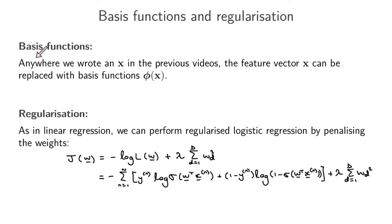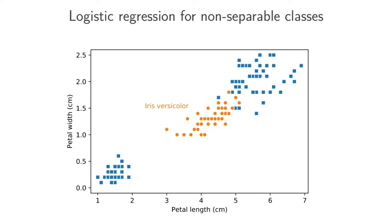Let's have a look specifically at an example of using basis functions. So here again, I've got the iris data. Here I've got petal length and petal width. And in this case, we've changed it into a binary classification problem where we want to classify whether something is an iris versicolor or not.